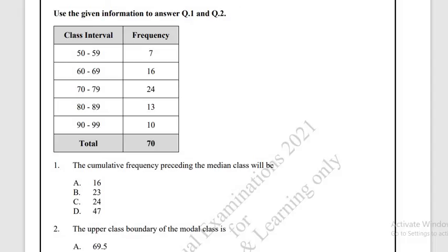Cumulative frequency is calculated as follows: the first cumulative frequency will be 7, then we add 16 and 7 to get 23, then 23 plus 24 gives 47, then 47 plus 13 gives 60, and 60 plus 10 equals 70. So we now have the cumulative frequency for each class.